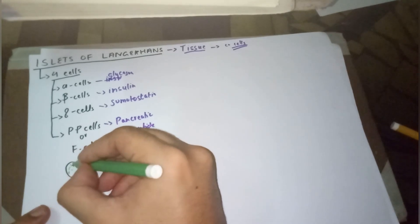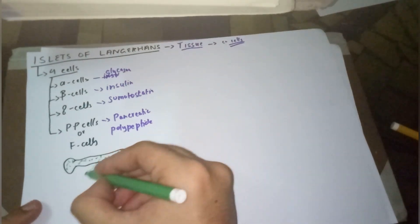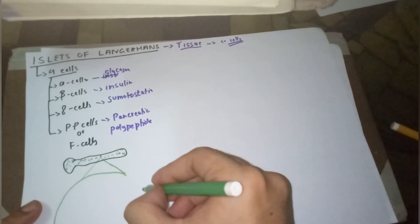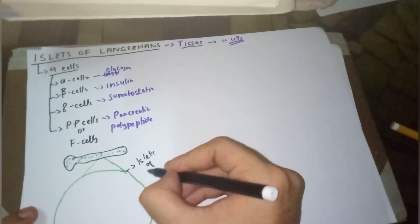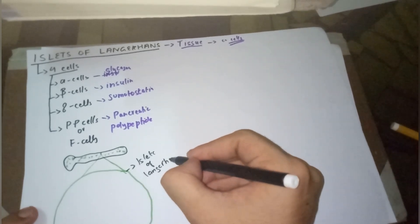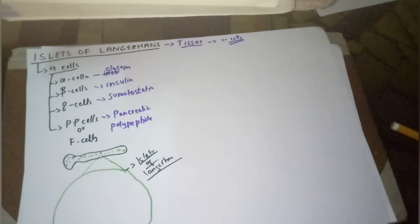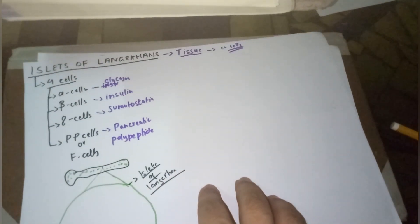What we are going to discuss in this lecture is their position and their functions, just as an overview. For example, here is a diagram of the pancreas with islets of Langerhans everywhere. Let's take out one islet of Langerhans and make it a little bigger.